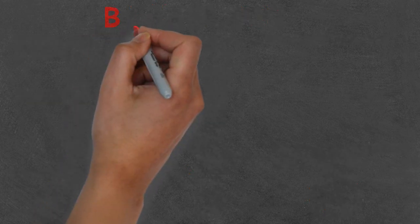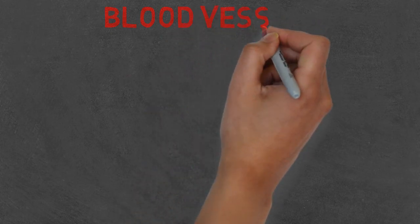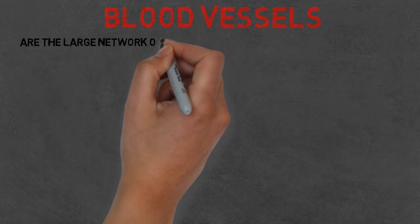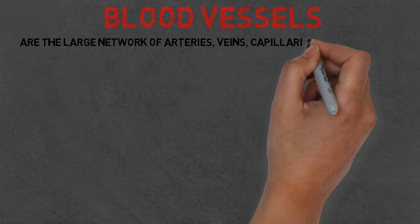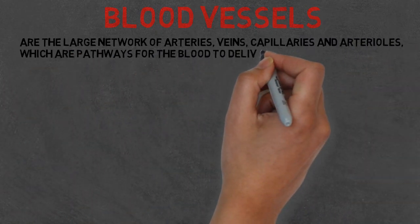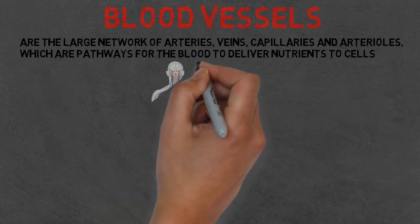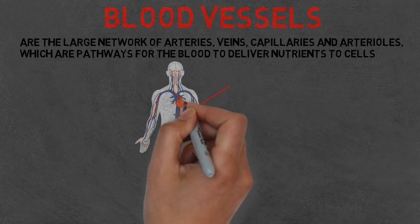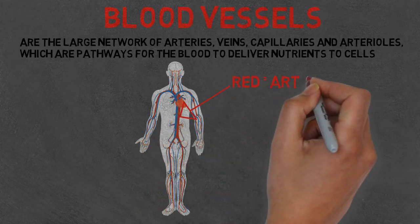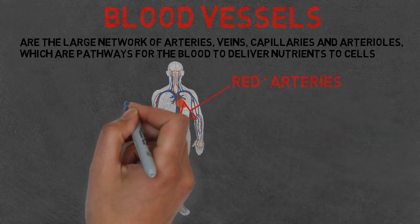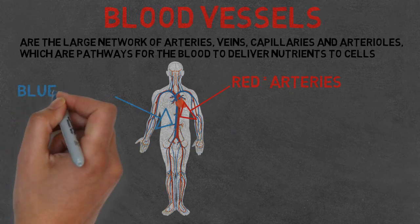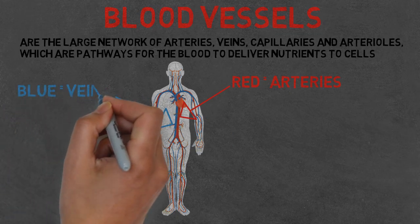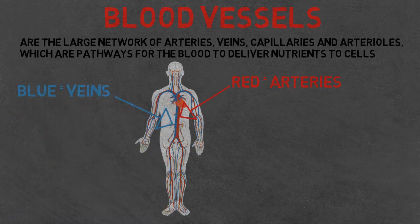Lastly, the blood vessels. They are a large network of arteries, veins, capillaries and arterioles which are the pathway for blood. If you look at the diagram, the red is the arteries — these carry blood away from the heart. The blue are the veins, which retrieve the deoxygenated blood and return it back to the heart.